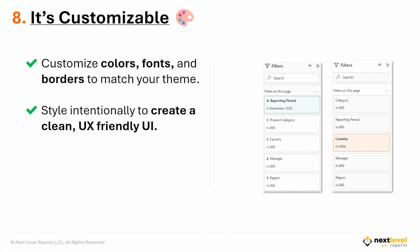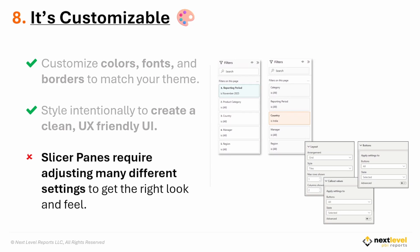Reason number eight: the filter pane is customizable. You can quickly customize the colors, fonts, and borders on your filter pane to match your theme and brand. This allows you to style the filter pane intentionally to create a cohesive UI. In part two of this series, I'm going to show you how to design a clean, modern, and user-friendly filter pane, and in part three we're actually going to design it from scratch. Slicer panes do offer more customization because they're custom visuals by nature, but it takes a lot of adjusting to get that perfect look and feel.